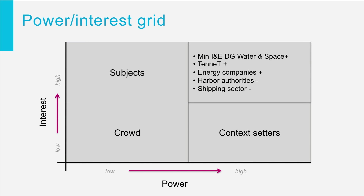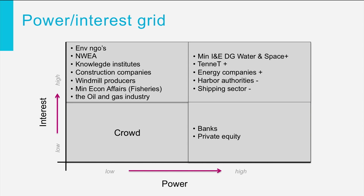When we fill out this power interest grid for our wind at sea case, we see the Ministry of Infrastructure and the Environment, Water and Space, Tennet, and the energy companies appear in the players list with a plus sign to indicate they are allies, while the harbour authorities and the shipping sector are in the same quadrant with a minus sign indicating they are opponents. Banks and private equity show up as context setters. The subjects are the environmental NGOs, the NWEA, knowledge institutes, construction companies, windmill producers, economic affairs, the fisheries side, and the oil and gas industry.